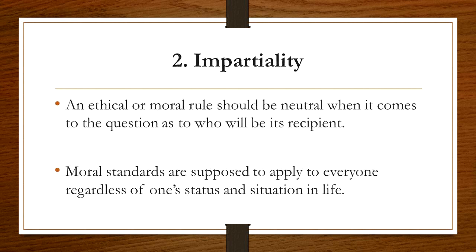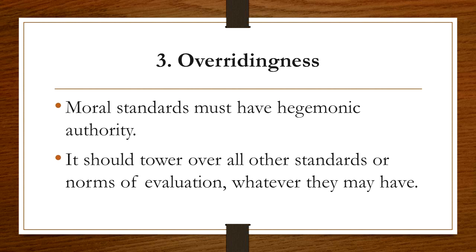Number two is impartiality. This means that an ethical or moral rule should be neutral when it comes to the question of who will be its recipient. Moral standards are supposed to apply to everyone regardless of one's status and situation in life. Moral rules should not advance the interest of a few, or worse, of one person alone. Self-interest does not have a place in proper moral standards. A moral belief should be for everyone, not only for the benefit of one or two persons or a certain group.